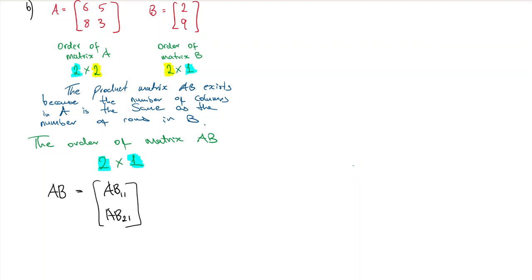So product AB, if I'm doing the first part here, I've got to use in matrix A the first row, multiplied by those values.